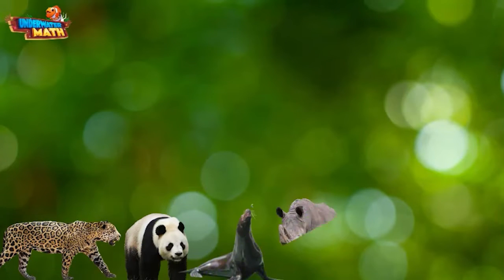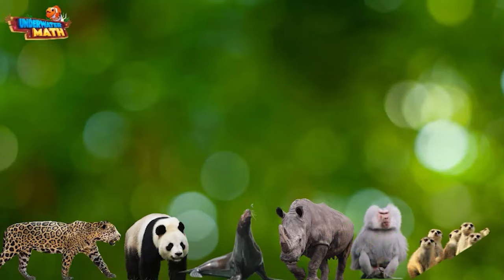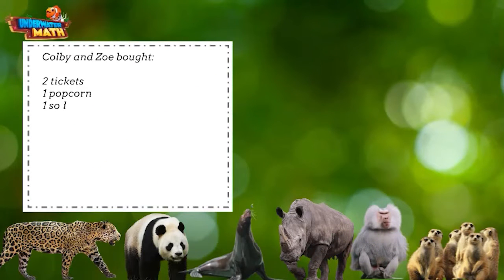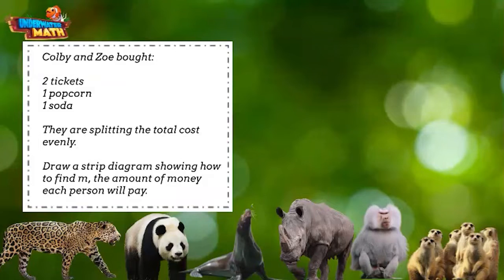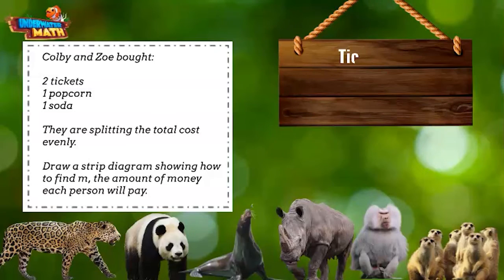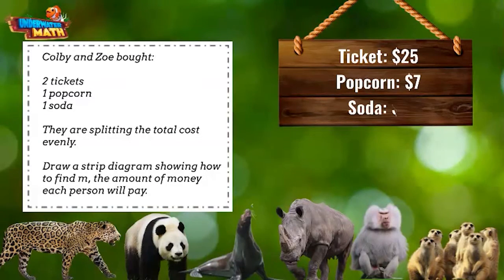Let's look at our first problem. Colby and Zoe are going to the zoo together. They bought two admission tickets, one bucket of popcorn, and one soda to share. They are splitting the total cost evenly. Draw a strip diagram showing how to find m, the amount of money each person will pay. Each ticket costs $25, popcorn is $7, and soda is $5.